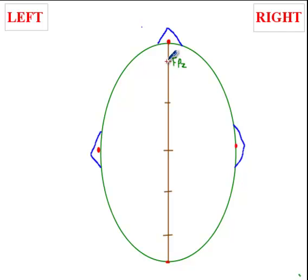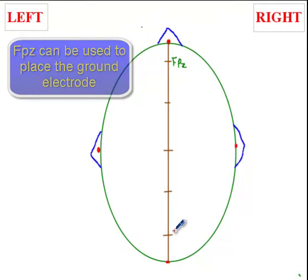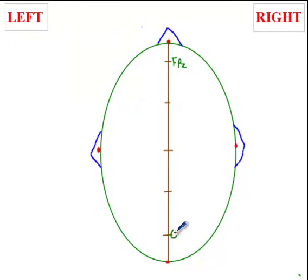You do not put an electrode here for EEG measurements, but this is a landmark to calculate for the points. And 10% from the inion, you have what we call OZ. Again, this is more for landmarks, you do not necessarily put an electrode here.